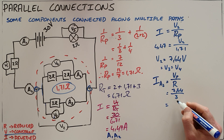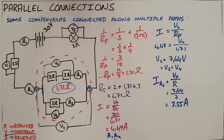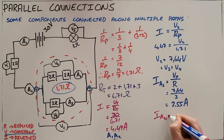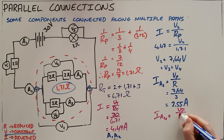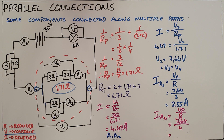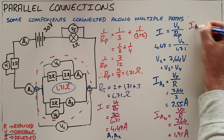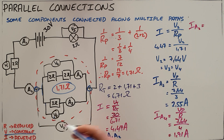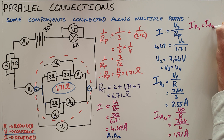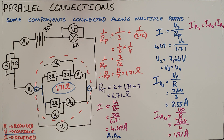That tells us the current through A3 is 2.55 Amps. We can similarly calculate the current through A4 — again using the same parallel voltage because voltage is constant in parallel — divided by the total resistance of 4 Ohms this time, which gives us a current of 1.91 Amps. This reinforces the rule for parallel circuits, because the current through A2 equals the sum of the currents through A3 and A4, showing that current is divided in a parallel circuit.